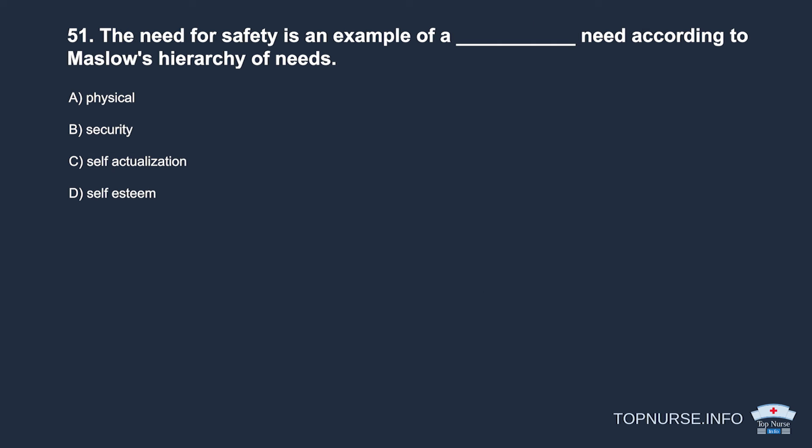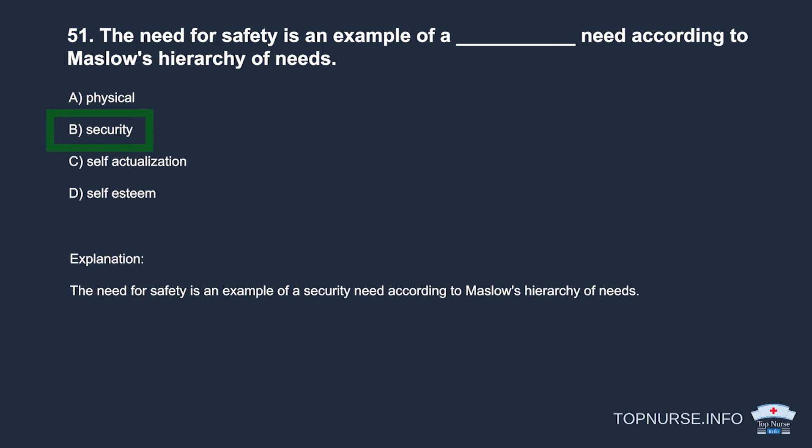Question 51: The need for safety is an example of a _____ need according to Maslow's hierarchy of needs. a. Physical. b. Security. c. Self-actualization. d. Self-esteem. Correct answer: b. Security. Safety is an example of a security need according to Maslow's hierarchy of needs.